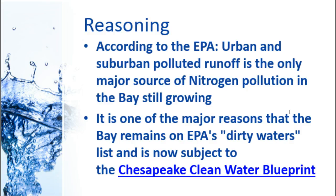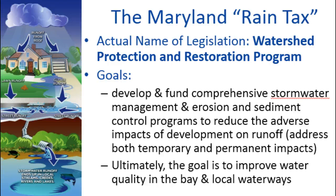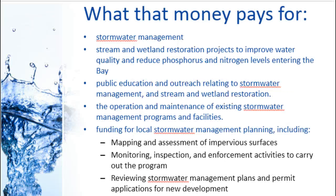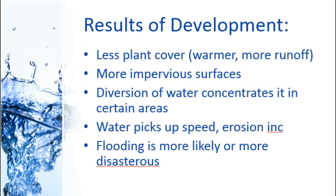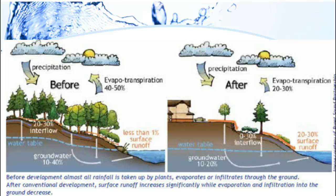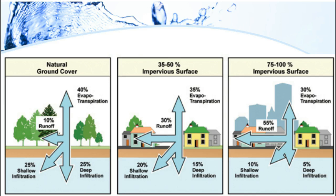The EPA has come out with a clean water blueprint for the Chesapeake that mandates all states draining water into the watershed have a plan and show improvement in water quality. The Maryland Watershed Protection and Restoration Program is how we're saying we'll deal with this, and the money goes directly toward those stormwater management programs. This picture shows that in developed areas there is much more surface runoff and much less seeping down to groundwater — and the more impervious surface, the more runoff, less infiltration to replenish groundwater, and less transpiration because there are fewer plants.